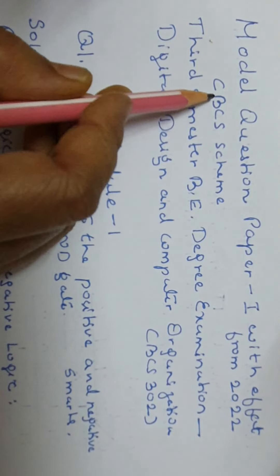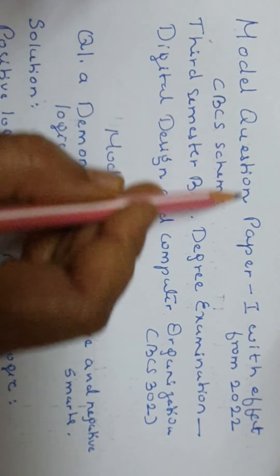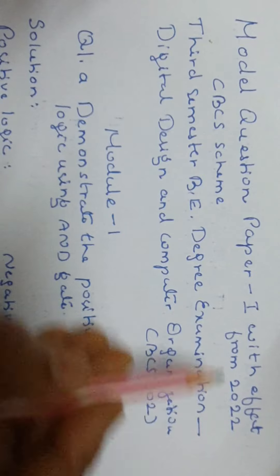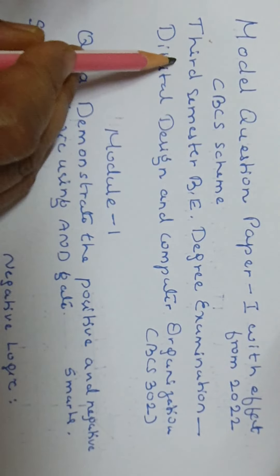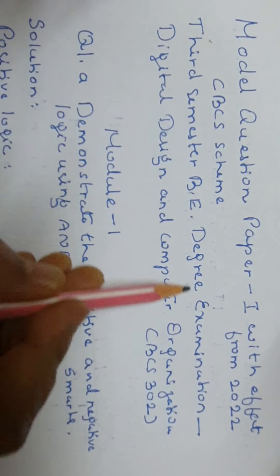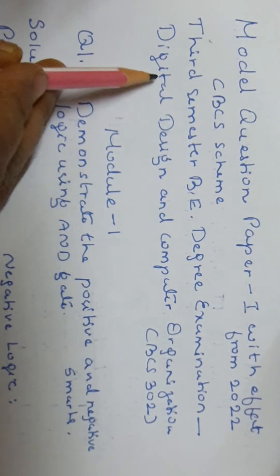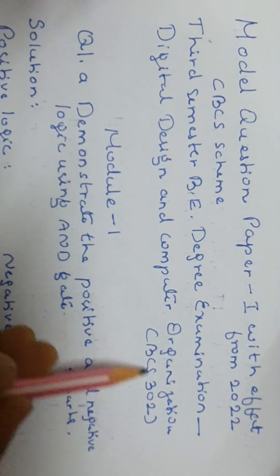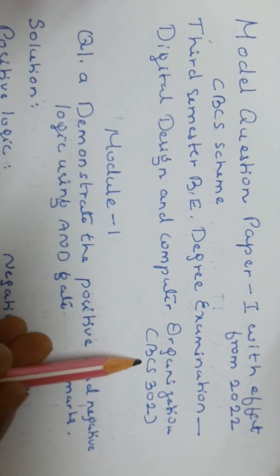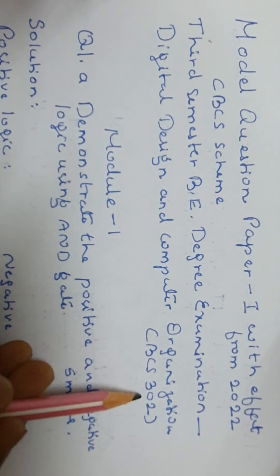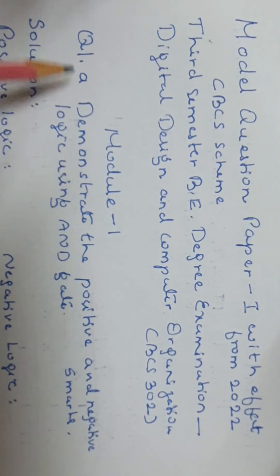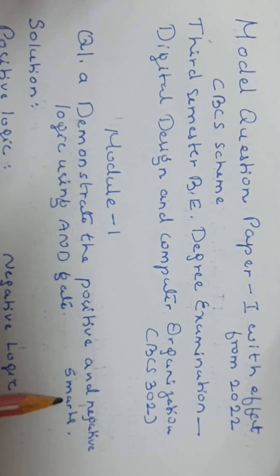Good day to all of you. Today we shall solve model question paper 1 with effect from 2022 CBCS scheme, 3rd semester B degree examination, the subject being digital design and computer organization with the subject code DCS302. We shall take up module 1, question 1A asked for 5 marks.